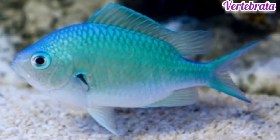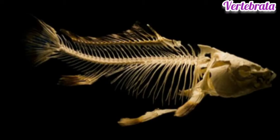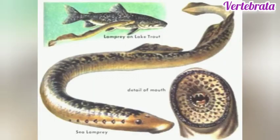Gnathostomata includes jawed vertebrates which also contain paired appendages. In Gnathostomata, the notochord is replaced partially or fully by the vertebral column. Agnatha contains one important class: Cyclostomata.